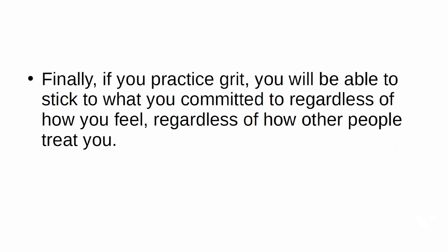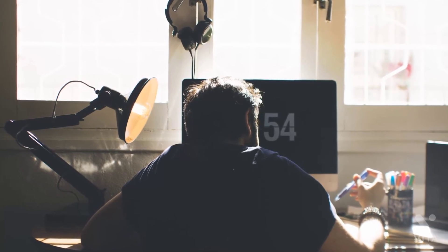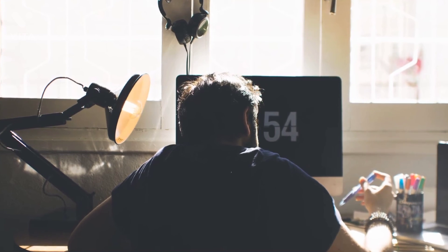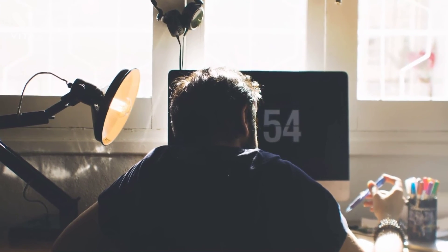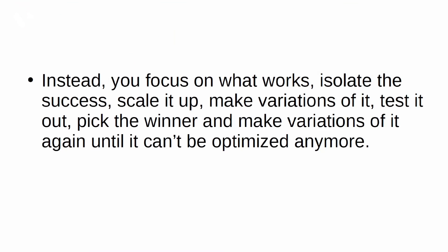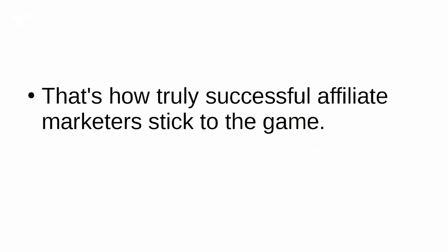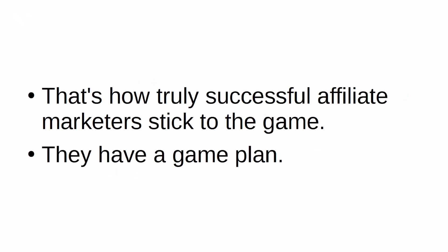Finally, if you practice grit, you will be able to stick to what you committed to regardless of how you feel or how other people treat you — you just keep pushing until you win. How does grit work? It boils down to committing to sticking to it. It doesn't matter what you're feeling that day, what other people say, or what kind of results you're getting. Instead, you focus on what works, isolate the success, scale it up, make variations of it, test it out, pick the winner, and make variations again until it can't be optimized anymore. Then you scale it up and diversify. That's how truly successful affiliate marketers stick to the game — they have a game plan.